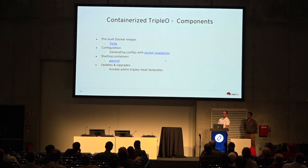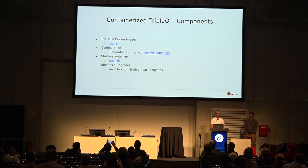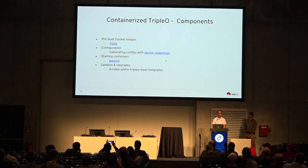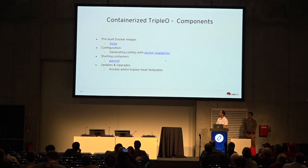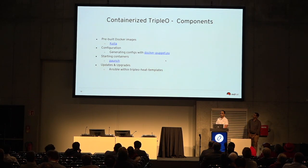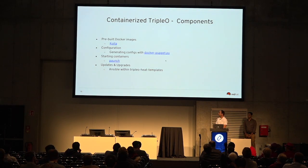Deep diving into the key components of the container build. We have Kolla, which provides container images and scripts. We have Paunch, a library used to start or deploy the containers. We have Docker Puppet, a Python script responsible for generating the configuration. And finally, for updates and upgrades, we have Ansible within the TripleO Heat templates.